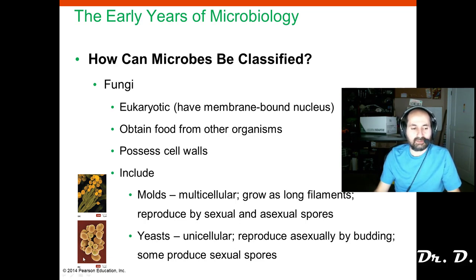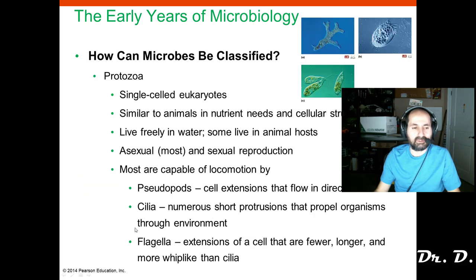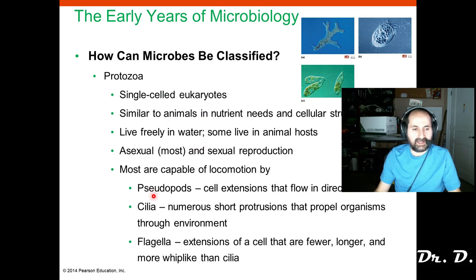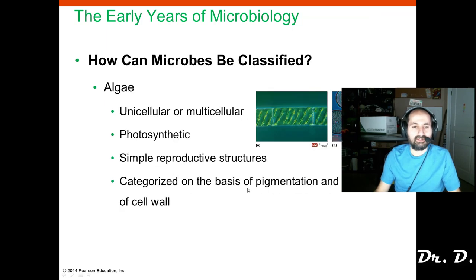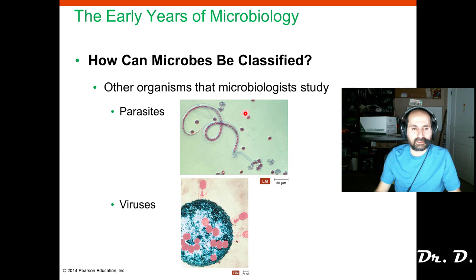Yeasts, on the other hand, are unicellular and reproduce asexually by budding, though they could also produce sexual spores. They look more like overgrown bacteria — a more oblong, egg shape. Remember that protozoa are types of protists. Many protists are single-cell eukaryotes, and protozoa are categorized and classified based on their locomotion — some use pseudopods, some have cilia, some have flagella, and some do not move at all.